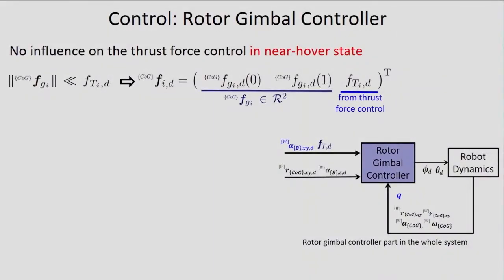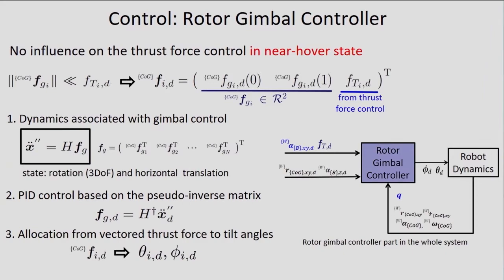The rotor gimbal controller, as the other part of our control system, is required to influence the thrust force controller. We assume the horizontal force generated by the gimbal control is much smaller than the desired thrust force generated by the thrust force controller — in other words, the desired gimbal angles should be very small. With this assumption, the dynamics model associated with the gimbal control can be derived, which contains rotational motion and horizontal translational motion. With this model, the desired horizontal force can be obtained from a general PID control based on the pseudo-inverse matrix, and finally the desired tilt angles can be calculated from the desired vector force based on simple geometry allocation.